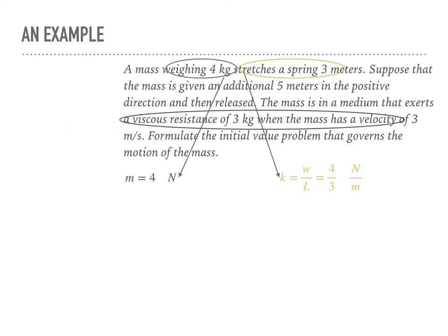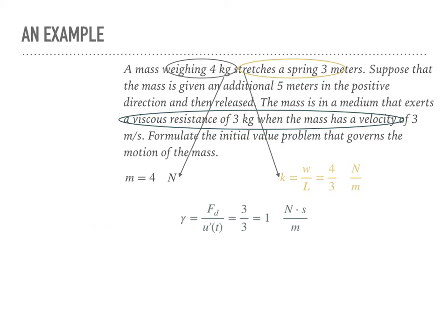The mass is in a medium that exerts a viscous resistance of three kilograms when the mass has a velocity of three meters per second. That viscous resistance is the damping force, so the damping coefficient gamma = force / velocity = 1. Using these three pieces of information, we can write the second-order differential equation with constant coefficients that describes the position of the mass in this system.